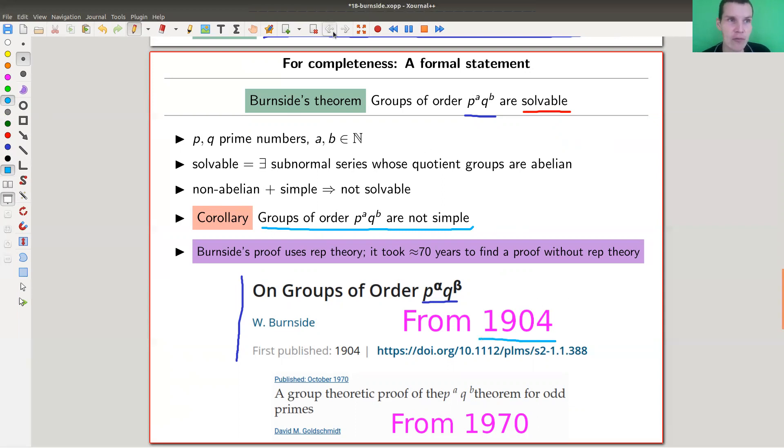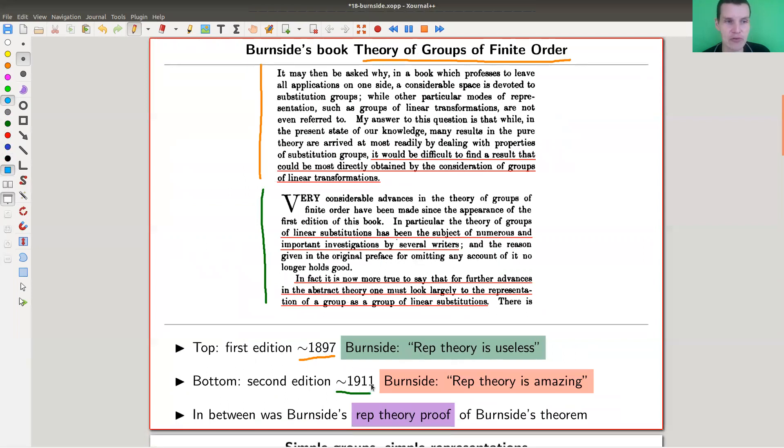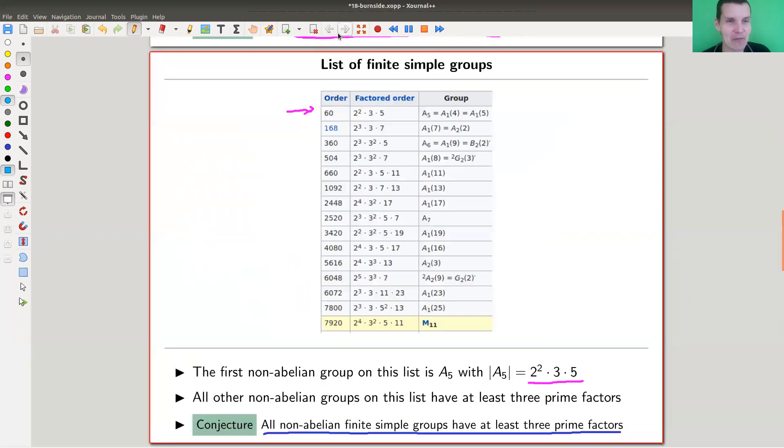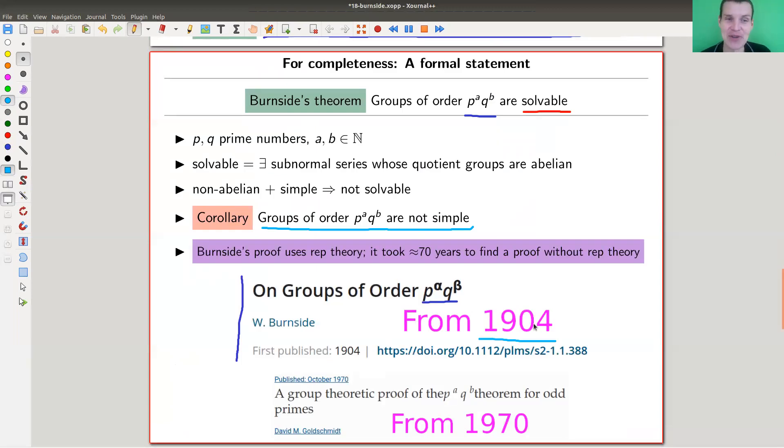Burnside proved it using representation theory. It was really in between the two versions of the book. In 1904, Burnside published this famous paper using representation theory to prove this purely group theoretical statement. It took about 70 years—1970—to find a group theoretical proof. The version I've listed is for odd primes; I have the link in the description for the general case. It took roughly 70 years to find a proof without representation theory, not because this was ignored by most people.